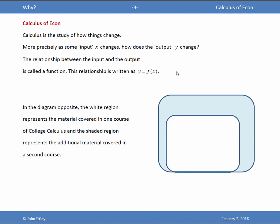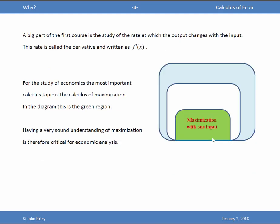Let me explain. In the diagram opposite, the white region represents the material covered in one course of College Calculus. Now the shaded region represents the additional material covered in the second course.